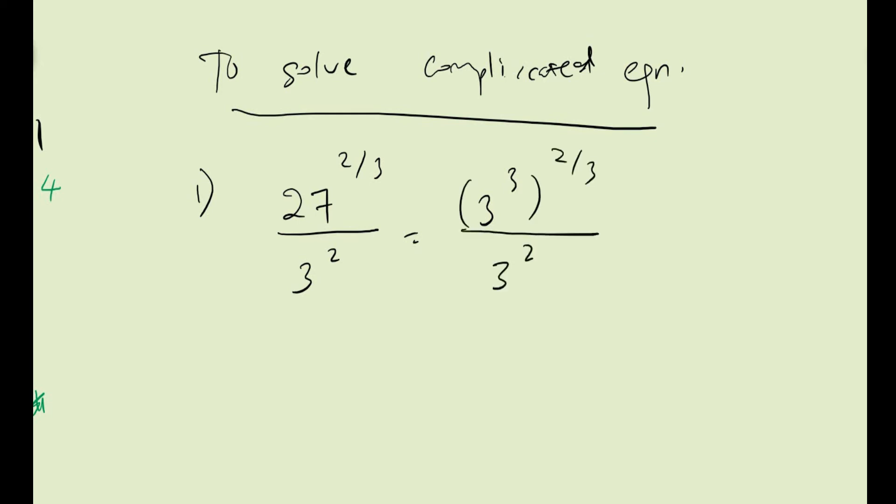And what about this question here? You have b power 5/6 multiply b power 1/6 over b half. And therefore just use the law of indices on the top part or the numerator. You have b power 1 over b half. And again, the law of indices says that you need to subtract the power. Therefore you end up with b power negative half.